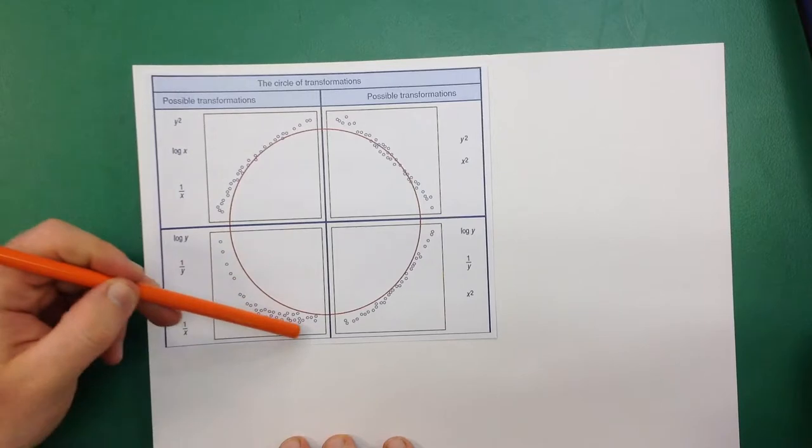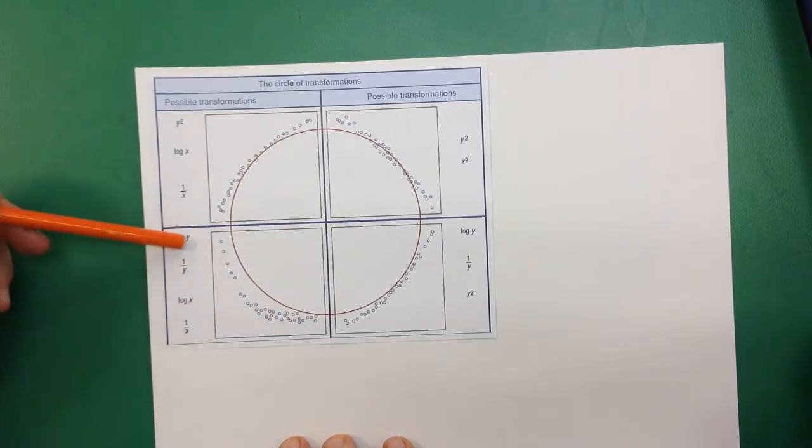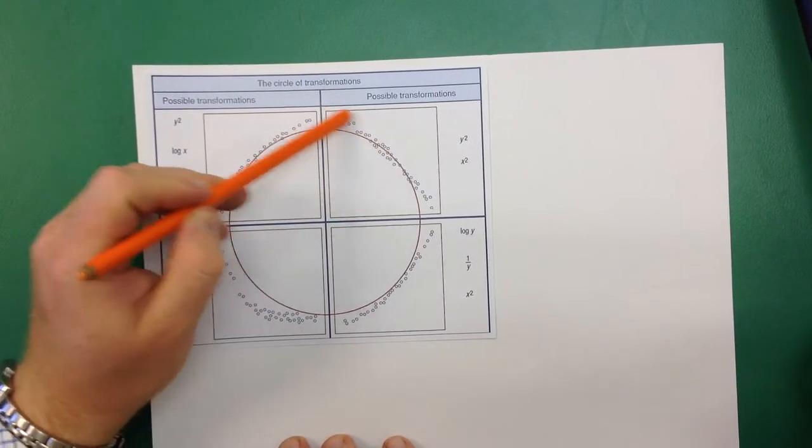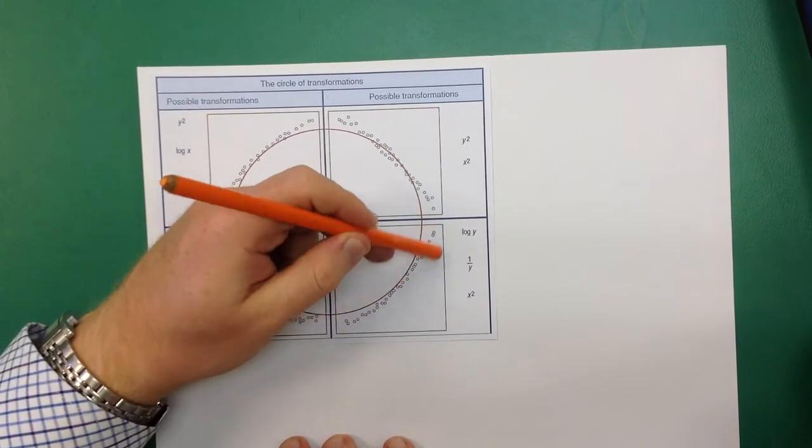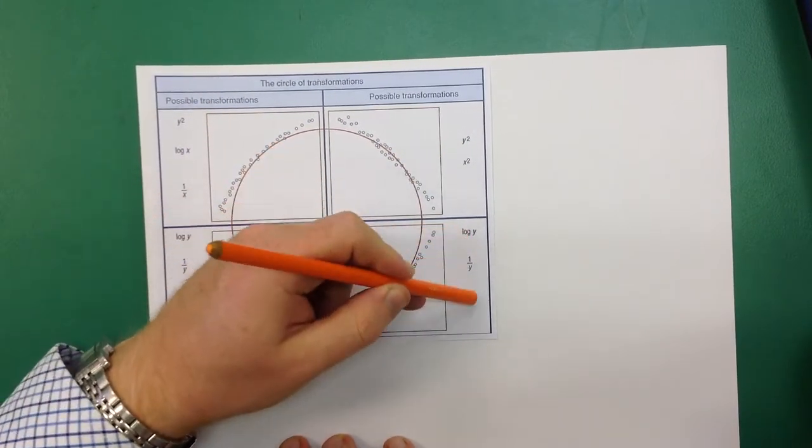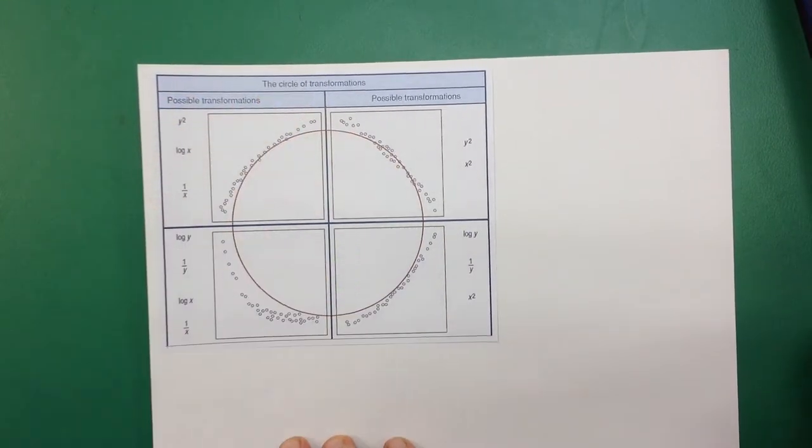If you see it curving this way, you've got to choose one of these four transformations. If it's curving this way, then you've got to choose one of these two transformations. And finally, if it's curved this way, you've got to choose between one of these three transformations. So you'll have four different types of graph.